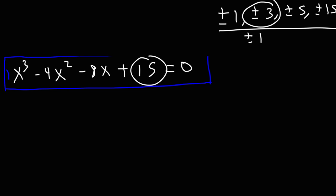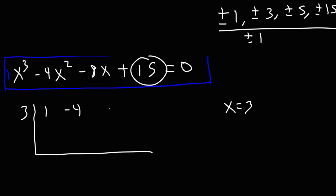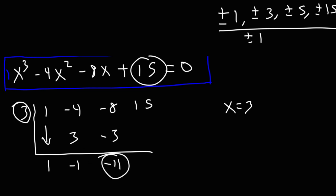Let's move on to the next number in the list: x equals 3. We have coefficients 1, negative 4, negative 8, 15. Bringing down the 1: 1 times 3 is 3; negative 4 plus 3 is negative 1; 3 times negative 1 is negative 3; negative 8 plus 3 is negative 11 — wait, negative 8 plus negative 3 is negative 11; 3 times negative 11 is negative 33; 15 plus negative 33 is negative 18. So this doesn't work either — x equals 3 is not a solution.